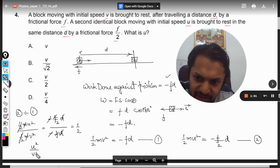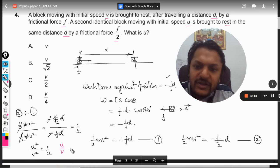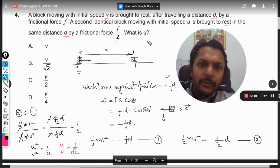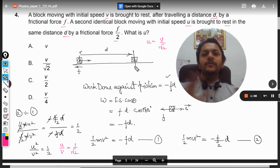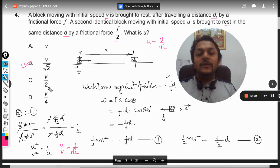So U² divided by V² is 1/2. U by V—I have just taken the square root on both sides of the equation. From here we can say that U will be equal to V divided by root 2. So in this case, our answer becomes B.